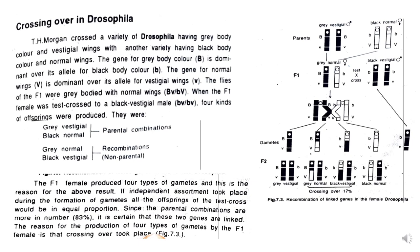The new combinations were non-parental and were possible only if crossing over happens between chromosomes. Crossing over resulted in new gene combinations: capital B with capital V giving grey body with normal wings, and small b with small v giving black body with vestigial wings. The F1 female produced four types of gametes. If independent assortment had taken place, all offspring of the test cross would be in equal proportions. Since the parental combinations were more numerous, the genes are linked.